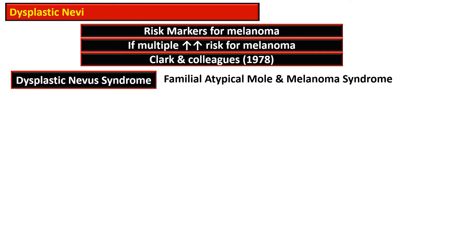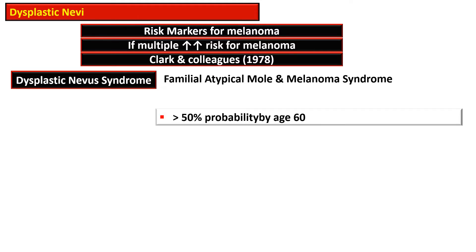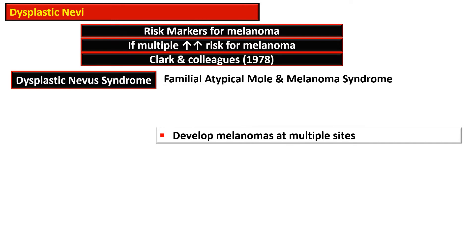Dysplastic nevus syndrome is also termed as familial atypical mole and melanoma syndrome. It is an autosomal dominant disorder associated with multiple dysplastic nevi and melanoma that are co-inherited. This condition has more than 50 percent probability of development of melanoma by the age of 60 years, and patients have a tendency to develop melanomas at multiple sites.